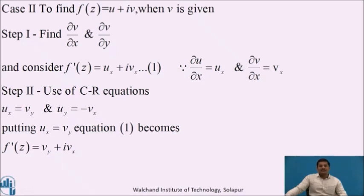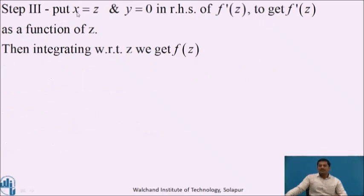Using the CR equations, ux = vy and uy = −vx. Here we want to replace ux, and we have ux = vy, where vy is known from Step 1. Putting ux = vy into equation 1, we get f'(z) = vy + i·vx. The expression on the right-hand side is now known. To convert it to a function of z, we substitute x = z and y = 0, giving f'(z) as a function of z. Integrating with respect to z gives the required analytic function f(z).